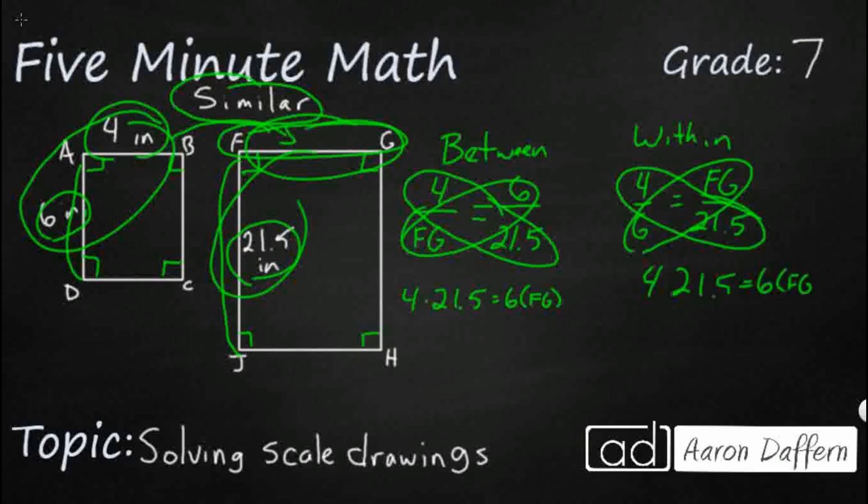So we've got two steps here. Let's go ahead and multiply this four times twenty one point five. That's going to be four and the two is six, that's eight. One digit after the decimal in my factor, let's bring that one digit back. Eighty-six. So eighty six point zero equals six times FG.